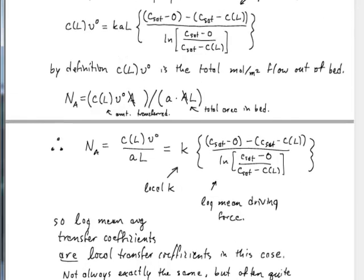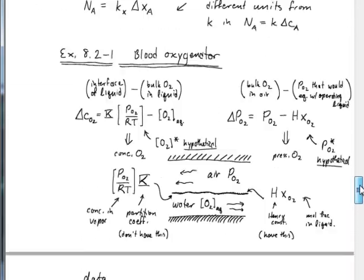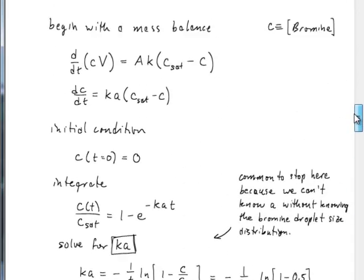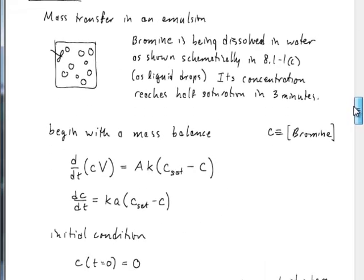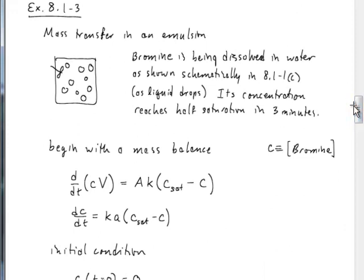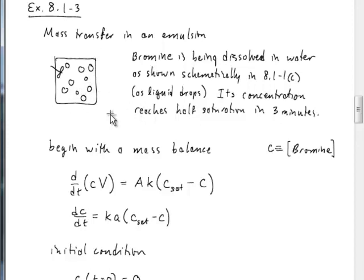I have a few minutes left. Let me do another example: mass transfer from an emulsion. We've got small liquid droplets of bromine being dissolved in water. We're told only that the concentration in the mixture reaches half saturation in three minutes. We don't know anything about the size distribution of the particles, and that's going to limit the extent to which we can find the mass transfer coefficient in this problem. We'll see how that works out as we go through.